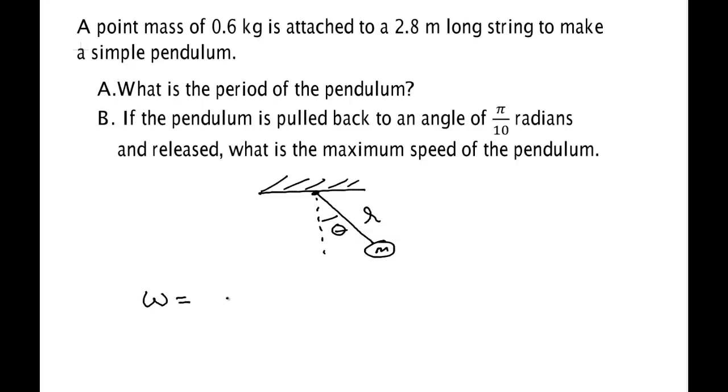Well for small angle swing, the angular frequency of the pendulum is the square root of g over L. The period is equal to 2π divided by ω. So that means for this oscillator this is 2π times the square root of L over g.